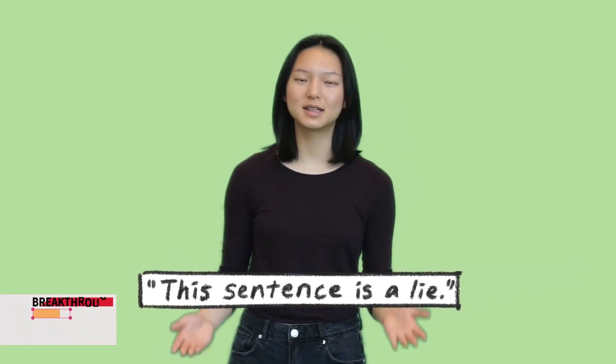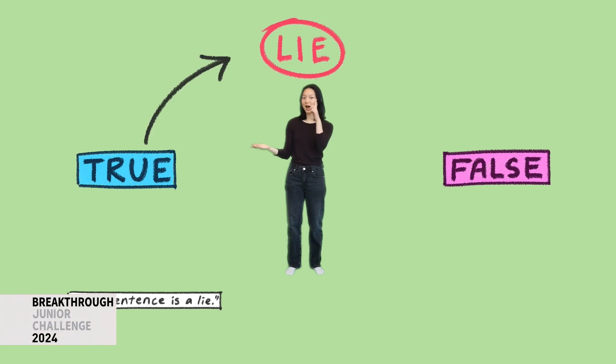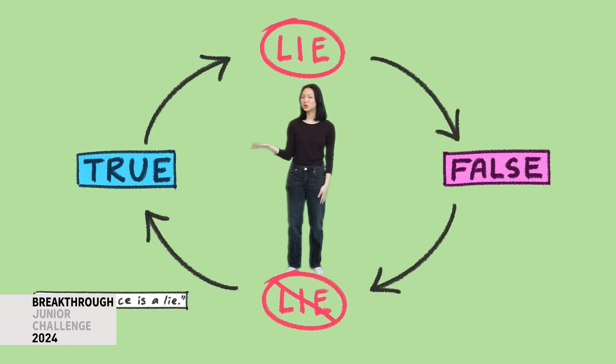Consider the statement, 'this sentence is a lie.' Is it true or false? If it's true, it's a lie, so it's false. But if it's false, then it's not a lie, so it's true.